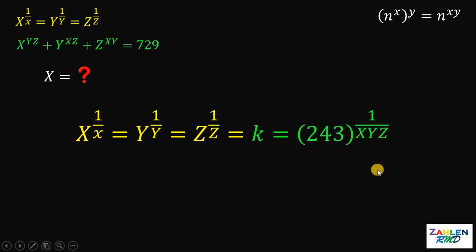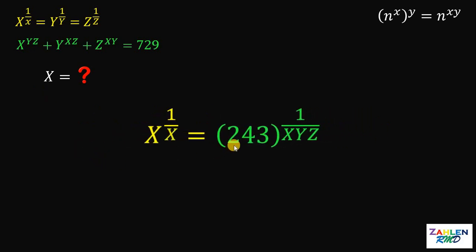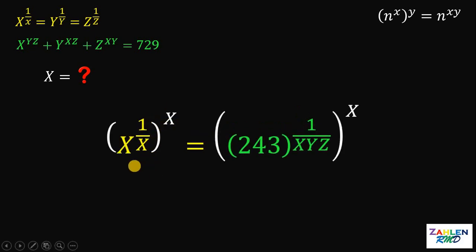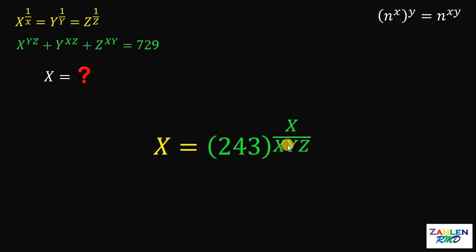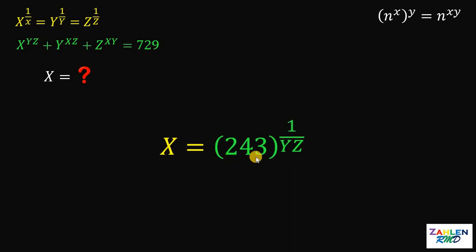Our goal is to solve for the value of x. So we take x raised to 1 over x equals 243 raised to 1 over xyz. To solve for x, we raise both sides by x. On the left-hand side, this gives just x. On the right-hand side, this gives 243 raised to x over xyz. We can cancel the factor of x in the numerator and denominator, giving us x equals 243 raised to 1 over yz.